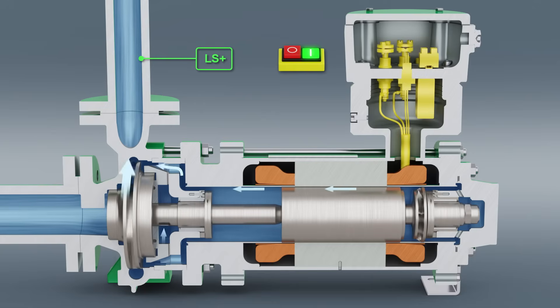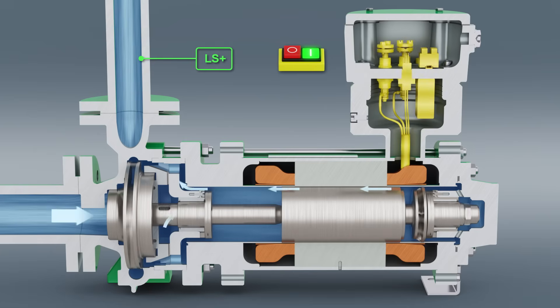The hermetic canned motor pump works with hydrodynamic bearings in continuous operation, wear and maintenance free. When filled with fluid, this low noise and low vibration pump offers double protection against leakage.